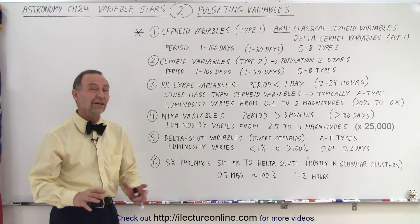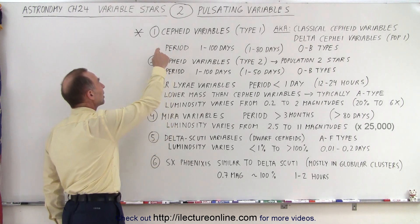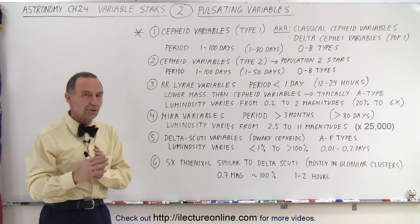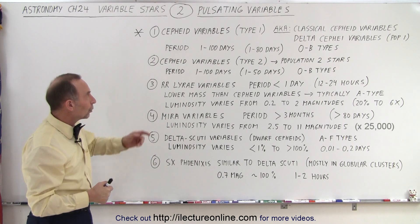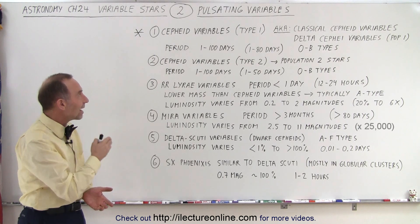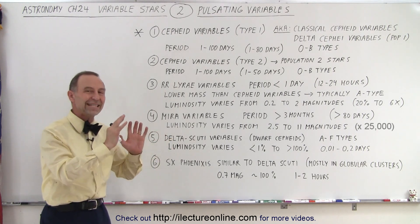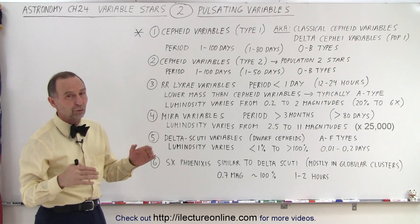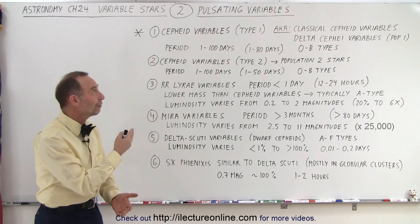We're going to concentrate mostly on the Cepheid variables, touching briefly on all the others. Cepheid variables are the ones that have given us enormous insight into many things in our universe. Remember, these are red giants near the end of their life cycle in the asymptotic branch — in the instability strip — and some are probably very close to becoming supernovas. We'll go into details on how they vary in brightness and what that looks like on a chart.